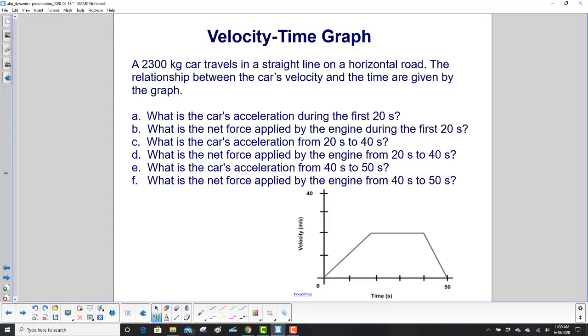A 2300 kilogram car travels in a straight line on a horizontal road. The relationship between the car's velocity and the time are given by the graph. What is the car's acceleration during the first 20 seconds?